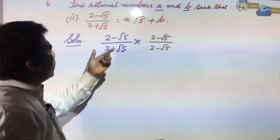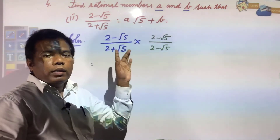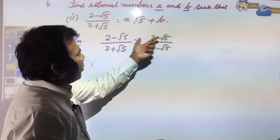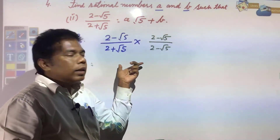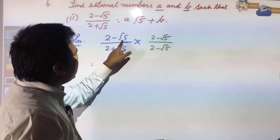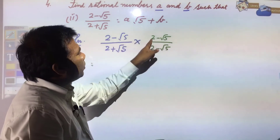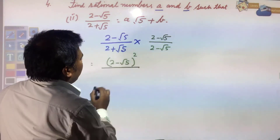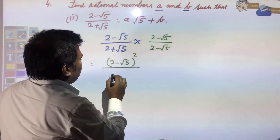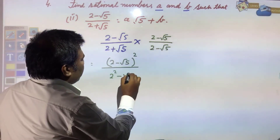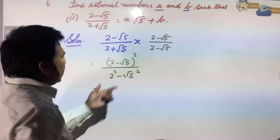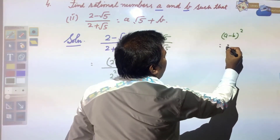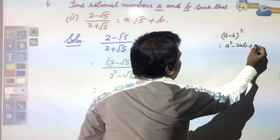Now in the numerator you have (a - b)(a - b), which is (a - b)². So the numerator becomes (2 - √5)². In the denominator you have (a + b)(a - b) = a² - b². Using the formula: (a - b)² = a² - 2ab + b², which gives 2² - 2(2)(√5) + (√5)².